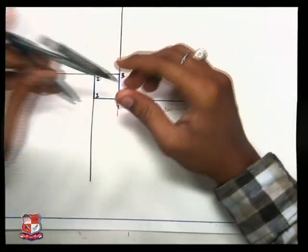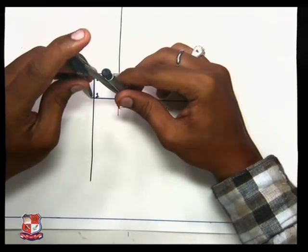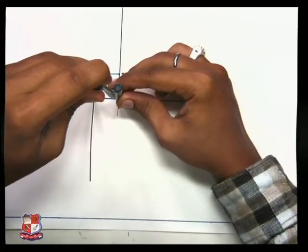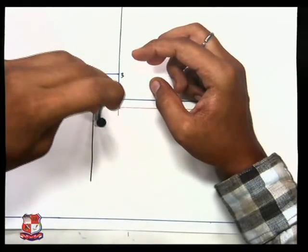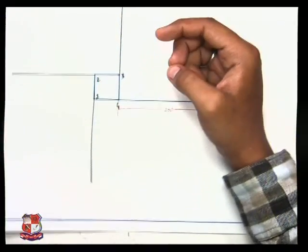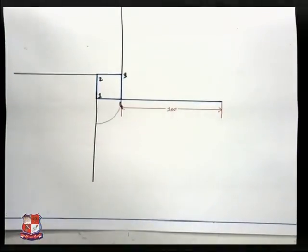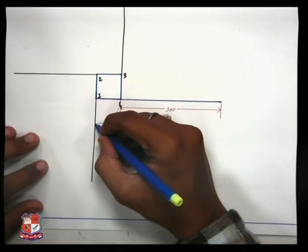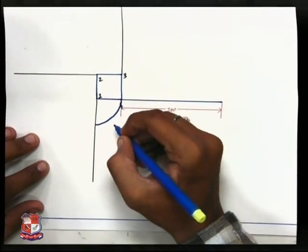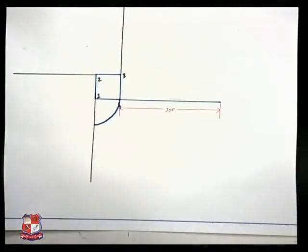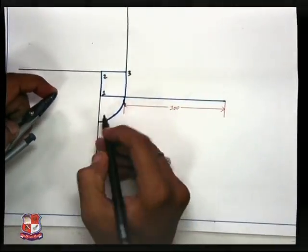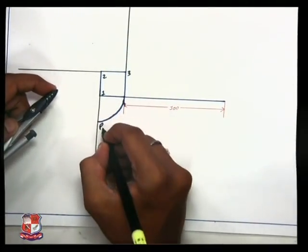Now take out your protractor compass. Take center as 1, radius is 1-4, make an arc. You will get arc like this. Give this point name P1.